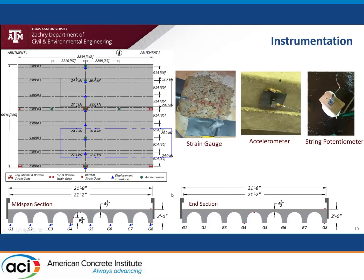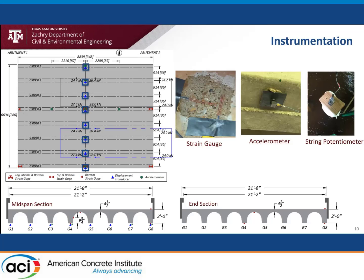The instrumentation plan for bridge CM5 is presented here. The top view of the instrumented bridge is presented on the left, and the mid-span and end sections are shown below. A pair of strain gauges was installed at 12 measurement locations to capture the strain profile at mid-span and at the ends of selected interior and exterior girders. Eight string potentiometers were installed at mid-span of each girder to record deflections during load tests. Five accelerometers were installed at mid-span of every other girder, and two accelerometers were installed at quarter-span lengths of an interior girder to record dynamic vibrations.